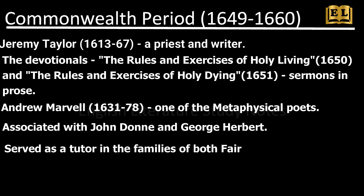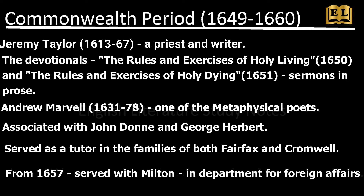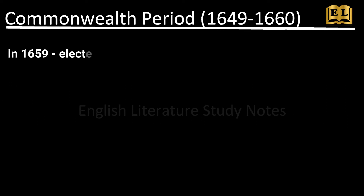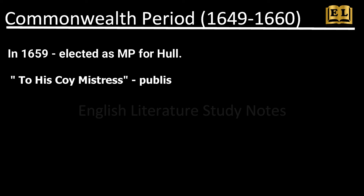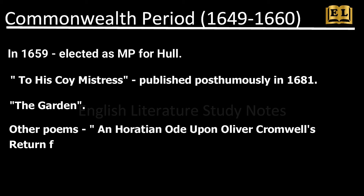Marvell served as a tutor in the families of both Fairfax and Cromwell. From 1657, he served with Milton in Cromwell's department for foreign affairs. In 1659, he was elected as MP for Hull. His best poems were written during the 1650s. Marvell's To His Coy Mistress was published posthumously in 1681, but it is speculated to have been written sometime near the end of the Civil Wars or during the early days of the Commonwealth. Another famous poem is The Garden.